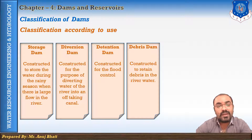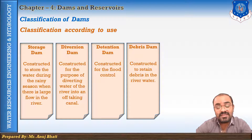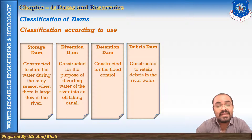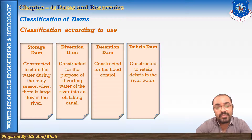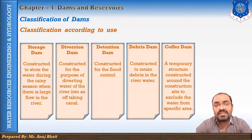The fourth is the debris dam. A debris dam is constructed to retain debris such as gravel, sand, silt, or floating timber in the river water. The water passing over a debris dam is relatively clear. Sometimes a check dam is constructed upstream of the reservoir to trap sediments and control sedimentation — such a check dam is called a debris dam.